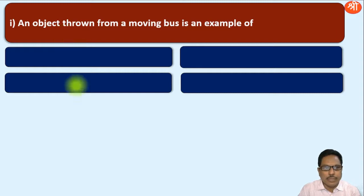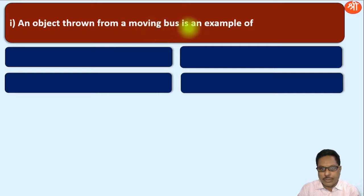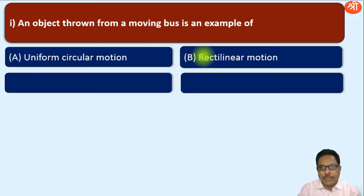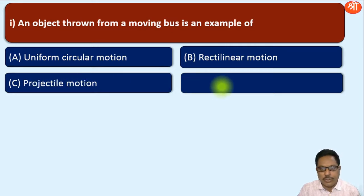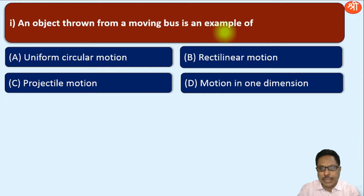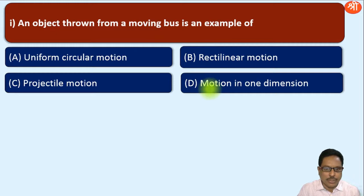Today's first multiple choice question is: an object thrown from a moving bus is an example of — with four options: A) uniform circular motion, B) rectilinear motion, C) projectile motion, and D) motion in one dimension. Which of these four options is correct?